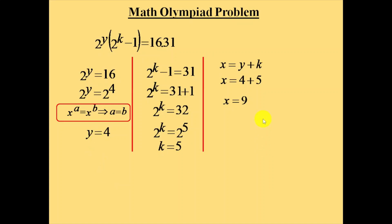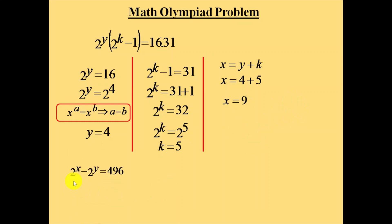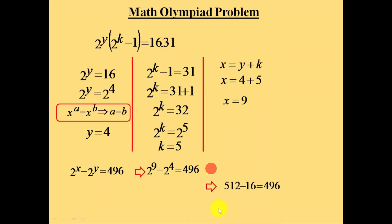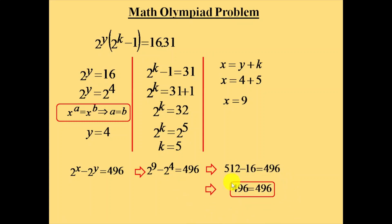Let us verify the values of x and y. The equation given is 2 power x minus 2 power y equals 496. With x equal to 9 and y equal to 4: 2 power 9 is 512, and 2 power 4 is 16. 512 minus 16 is 496, so left-hand side equals right-hand side. The values x equals 9 and y equals 4 are correct. Thank you.